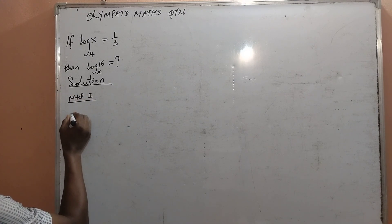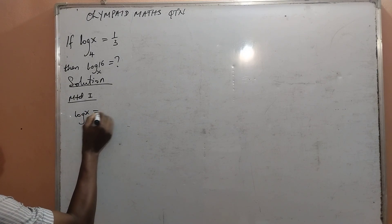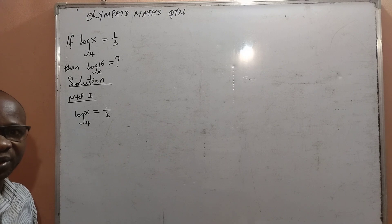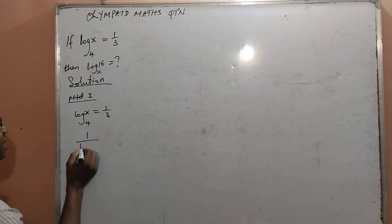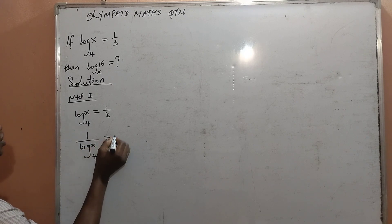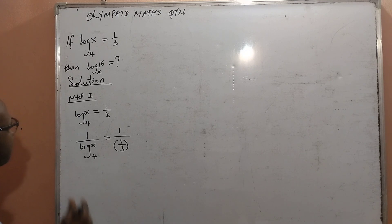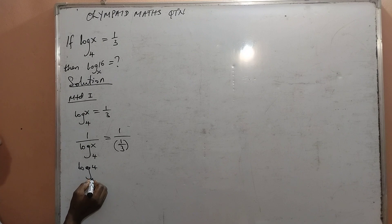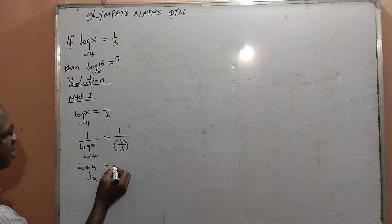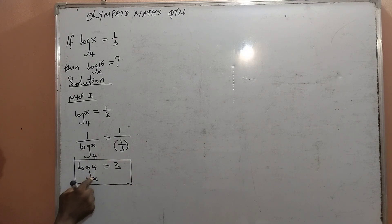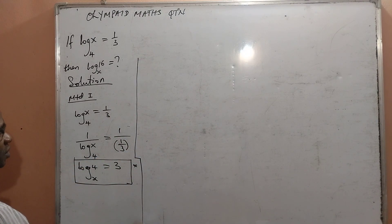Method one. I am given that log x base 4 is equal to 1/3. The first step I will take is to find the reciprocal of both sides. That means 1 over log x base 4 is equal to 1 over (1/3). The reciprocal of the left hand side gives me log 4 base x, and the reciprocal of the right hand side gives me 3. So I have gotten that log 4 base x is equal to 3.